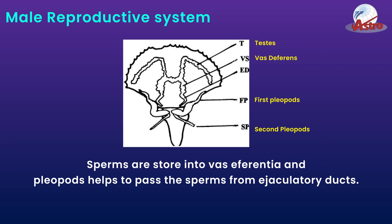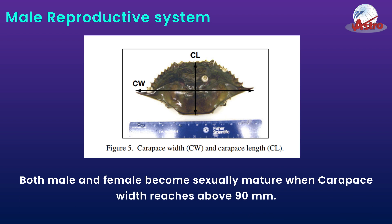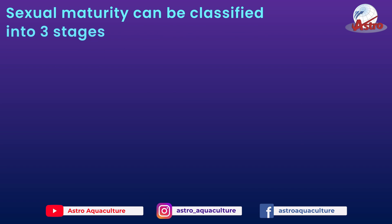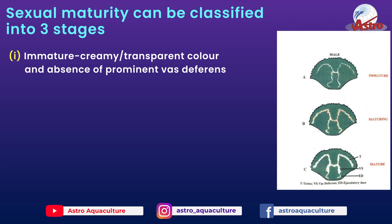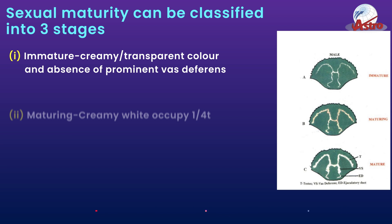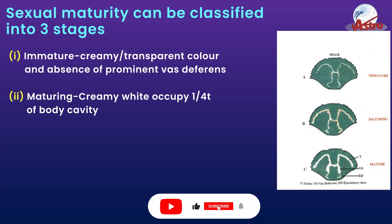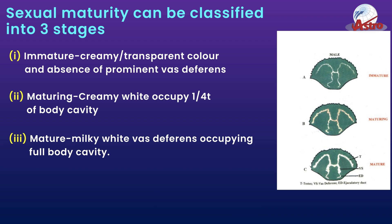Sperms are stored in the vas deferentia, and pleopods help to pass the sperms from the ejaculatory ducts. Both male and female become sexually mature when the carapace width reaches above 90 mm. Sexual maturity can be classified into three stages: 1. Immature — creamy, transparent color, and absence of prominent vas deferens. 2. Maturing — creamy white, occupying one quarter of the body cavity. 3. Mature — milky white vas deferens occupying the full body cavity.